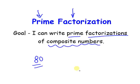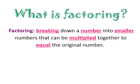We're going to break this number down into factors that are all prime, so the prime factors I end up with, I should be able to multiply back and get to 80. The way we do prime factorization is using factor trees, but first — what is factoring? Factoring is when I break down a number into smaller numbers that can be multiplied together to equal the original number.